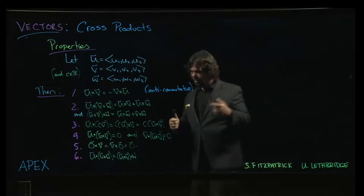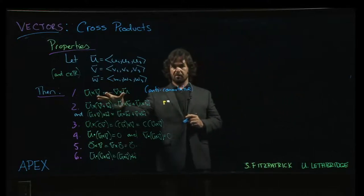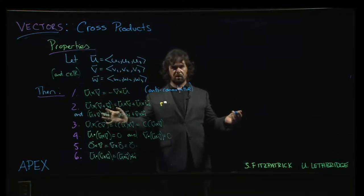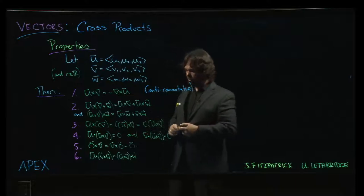And that's because we don't have a commutative property, we have this anti-commutative property. So technically cross product on the left is a little bit different from having the cross product on the right.